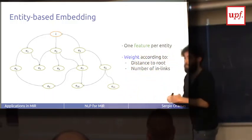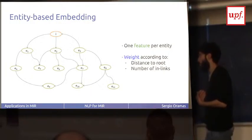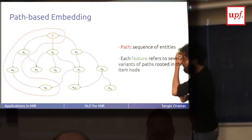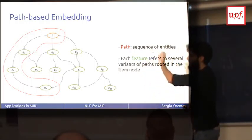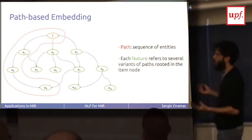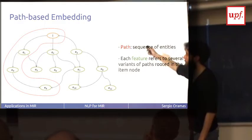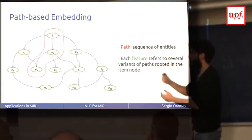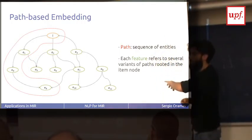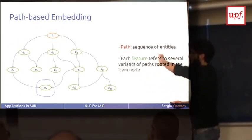Then we can also apply TF-IDF to reweight this matrix. Another embedding we have used is the entity-based embedding. Here, we also want to measure the distance from the node to the item — it's not the same to be at the first level or the second or the third. We can apply a decreasing weight in terms of distance from the item. If a node has more in-links, perhaps it is more important, so we can give more weight to those nodes. This is the entity-based embedding.